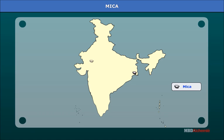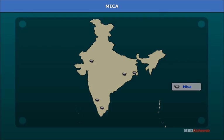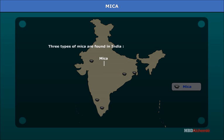Mica production. India is the largest producer of mica, accounting for 60% of mica trade in the world. Average annual production of mica is about 2,000 tons. It is a transparent mineral deposited in layers, and its ability to withstand high temperatures along with its transparency makes it ideal for a host of industrial applications. Three types of mica are found in India: White Mica, Amber Mica, and Black Mica.